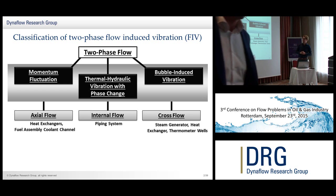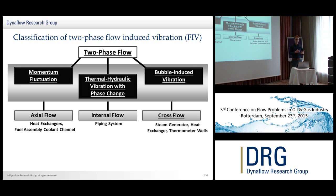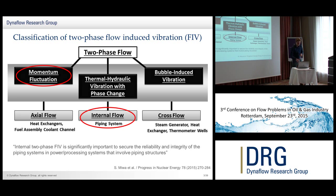They also say something about fluid-structure interaction. They define axial flow — flow on the outside of a tube, for instance within a heat exchanger alongside the tubes. Internal flow is basically all types of two-phase flow within the pipe itself causing forces from within. And cross flow is flow outside of the piping perpendicular to the piping, for example, tubes within a heat exchanger. During this presentation, I'm going to focus on momentum fluctuation and internal flow, since these are the ones we work with most.